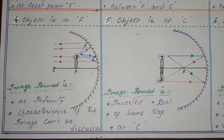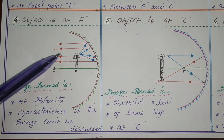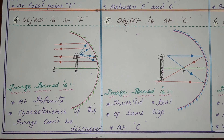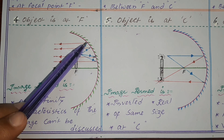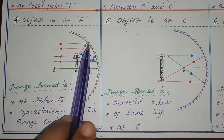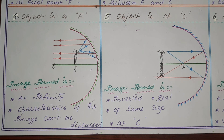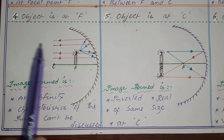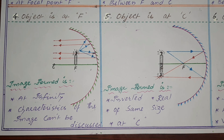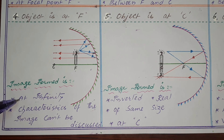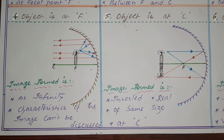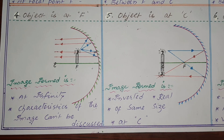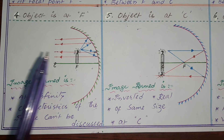The next possible position is the fourth case: object is at F — the object is kept on the focal point. The incident light rays, shown in blue, reach the concave mirror, reflect back, and travel parallel to each other and to the principal axis. So the reflected light rays travel up to infinity and the image is formed at infinity. Since the image forms at infinity, we cannot define the characteristics of the image.